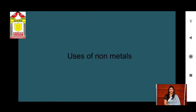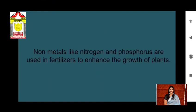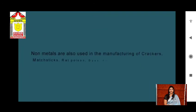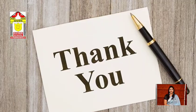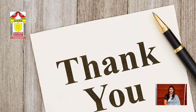Now let's see the uses of non-metals. Oxygen, a non-metal, is essential for all living organisms for breathing. Non-metals like nitrogen and phosphorus are used in fertilizers to enhance the growth of plants and increase the fertility of soil. Chlorine is used to disinfect water as it kills germs. Non-metals are also used in the manufacture of crackers, matchsticks, dyes, and many other products. That's all for this chapter — thank you for watching.